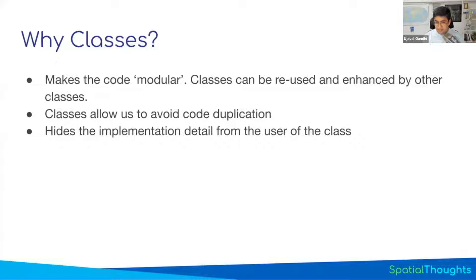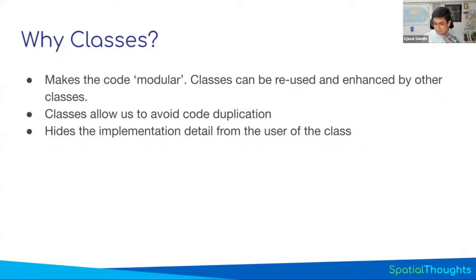You don't have to go and change every place where there was code. Users can say, I just want to use this class that does this thing — I don't care how it's implemented in the future. If that implementation improves, my code will get better and faster. This is why when we teach how to write new algorithms, we say if you're doing any new development, use the processing framework in QGIS. The processing classes are very well structured and over time they get faster and better, so your tool will also get faster and better.